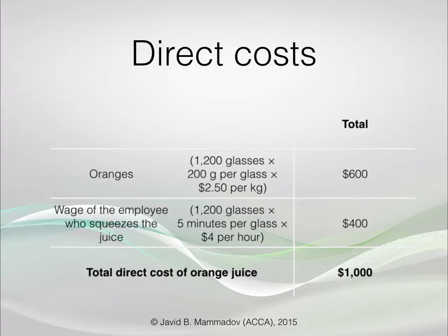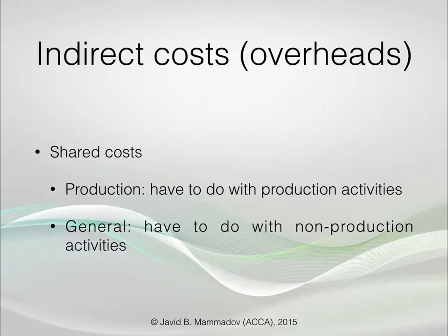You also have to take account of the remaining costs incurred by the business — costs that are shared. These costs are called indirect costs, or more commonly overheads. Overheads can be classified into production overheads, which are shared costs related to production, and general overheads, which are also shared by two or more goods but have to do with something other than production.